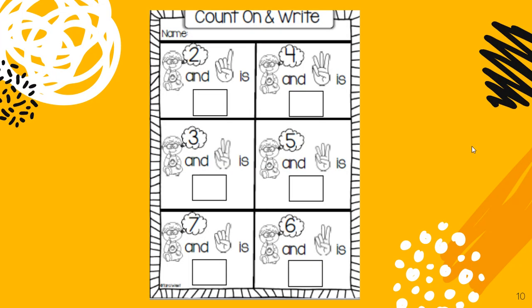All right, this is the last one we're going to look at. So this paper is having us start at a number, the big number in the bubble, and counting on by the number of fingers shown. So start at the number 2 and count on by 1. 2. And I want you to use your fingers just like they're showing. So I want you to put one finger up. 2, 3.